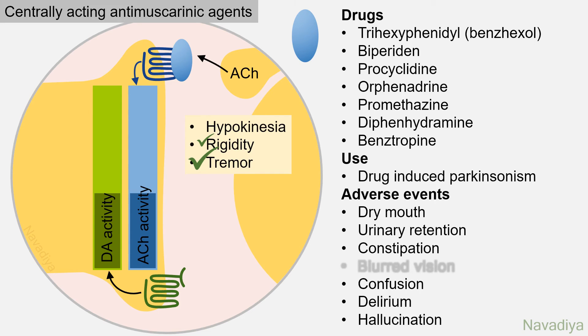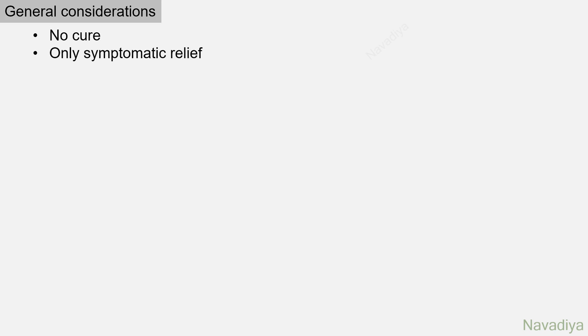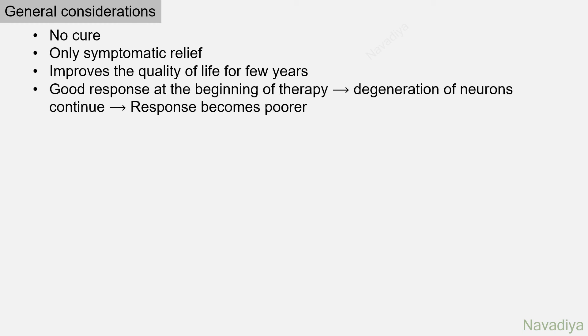This completes all anti-Parkinsonian drugs. Regarding general treatment points: till date there is no drug to cure the disease. All drugs provide only symptomatic relief and improve quality of life for a few years. Usually drugs show good response at the beginning of therapy; however, with time, degeneration of neurons continues, so response becomes poorer as time passes.